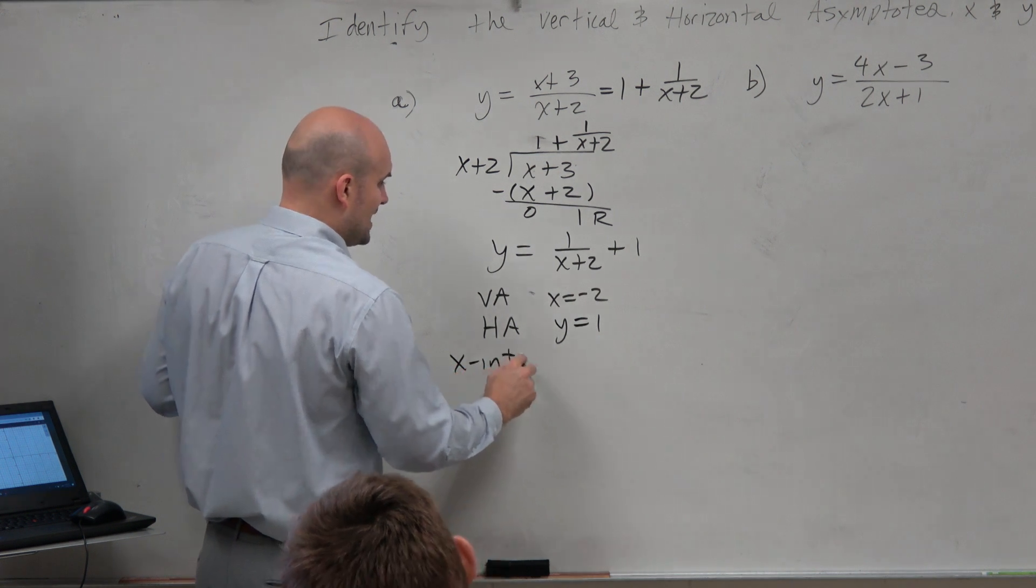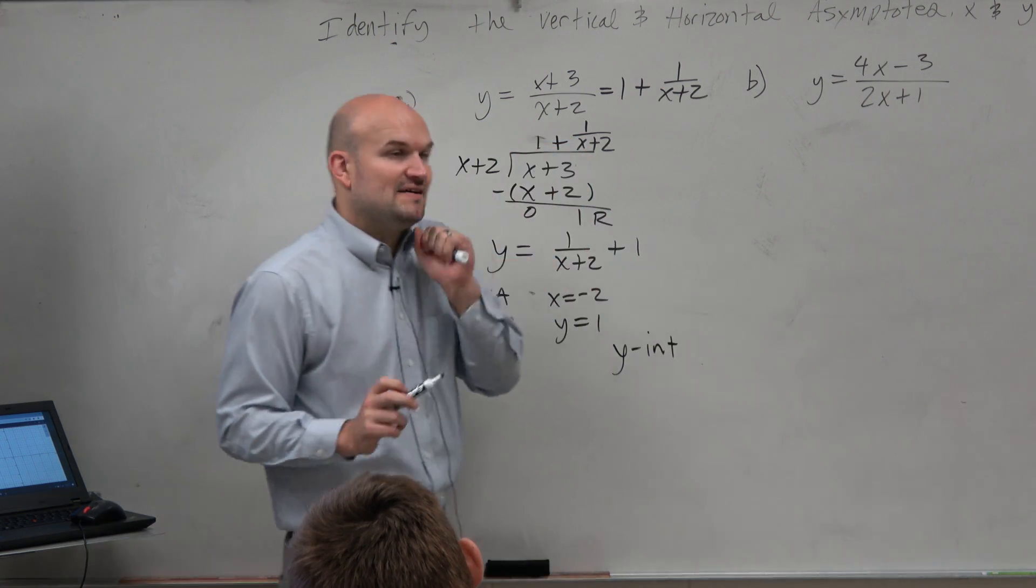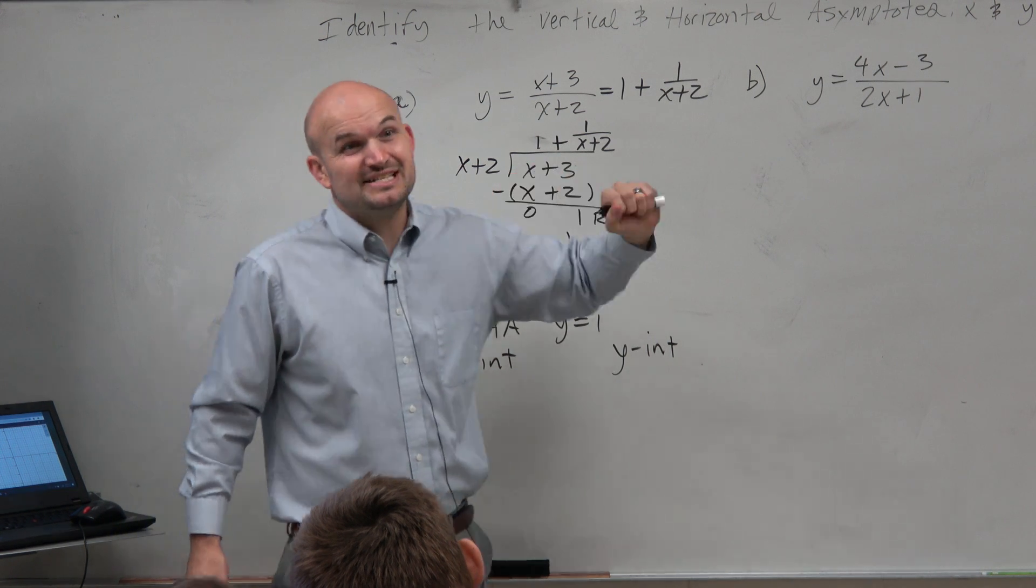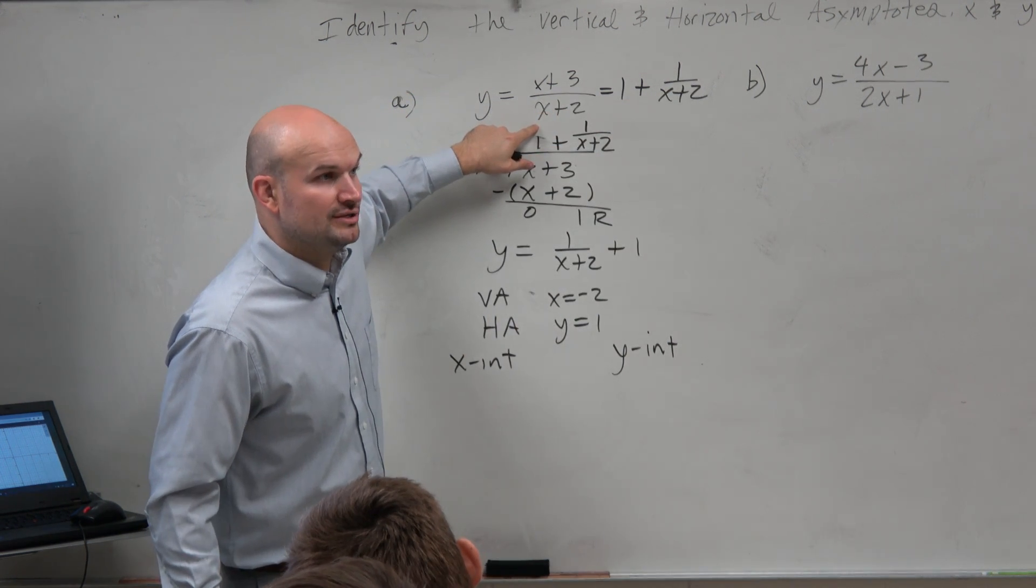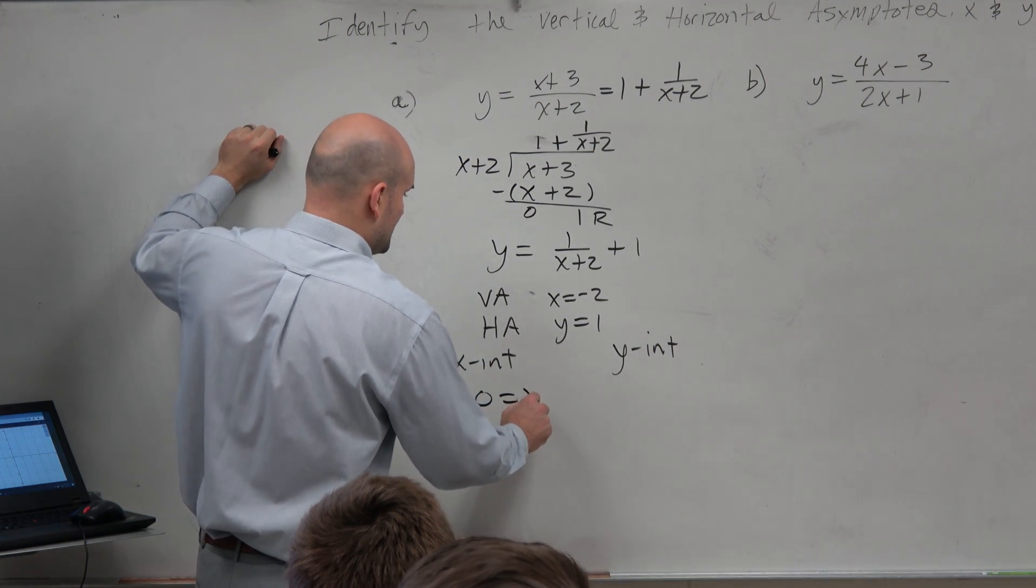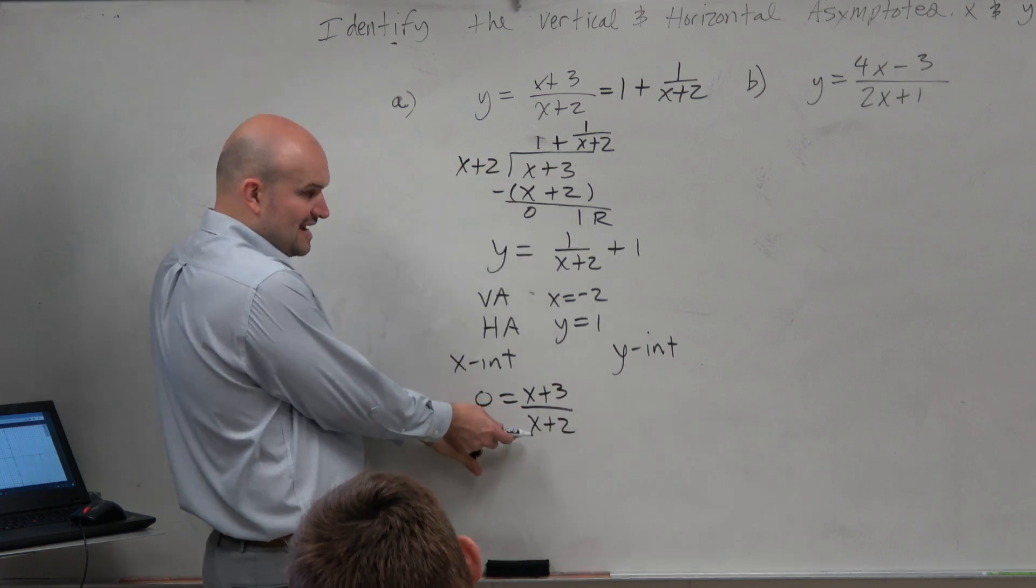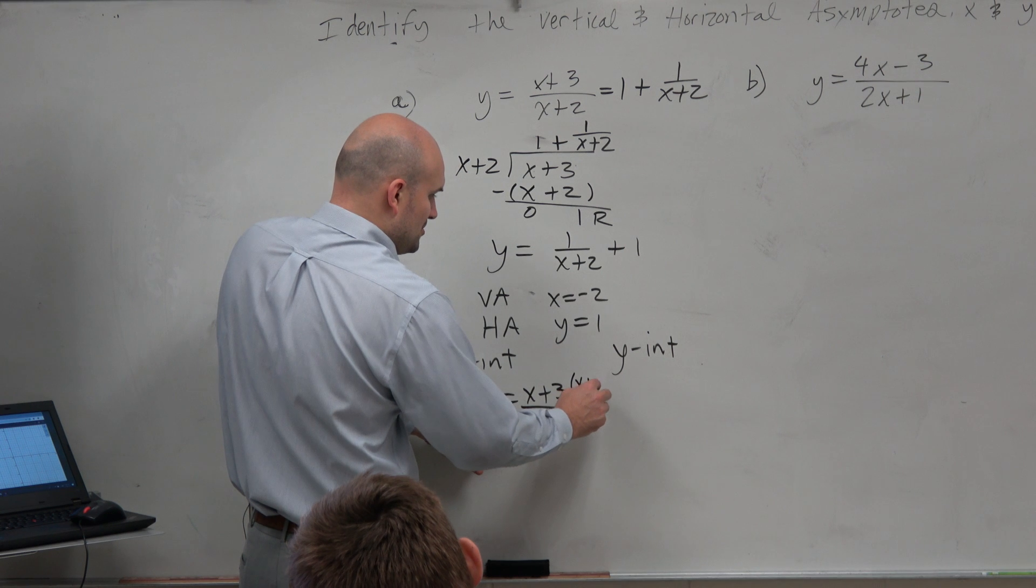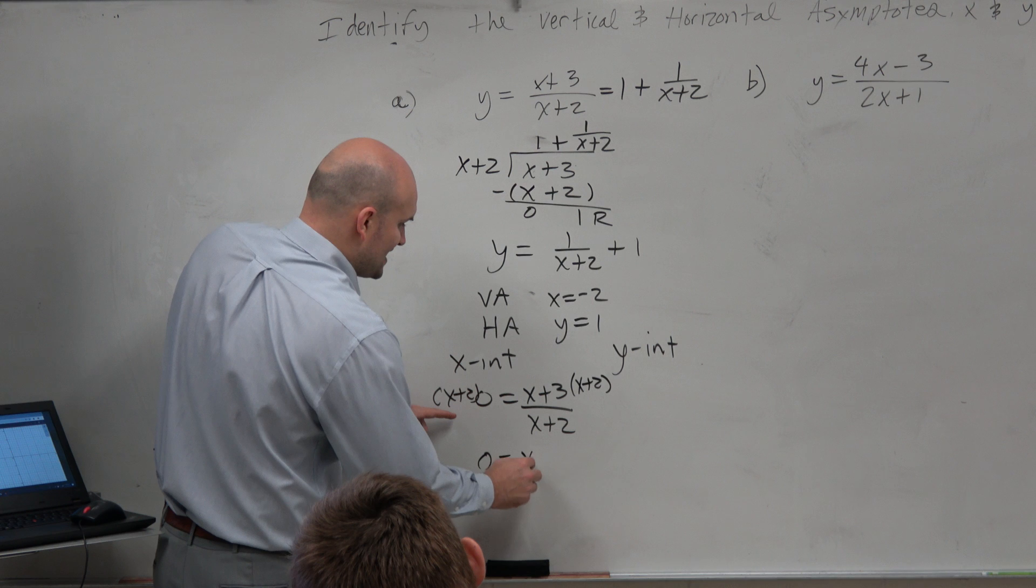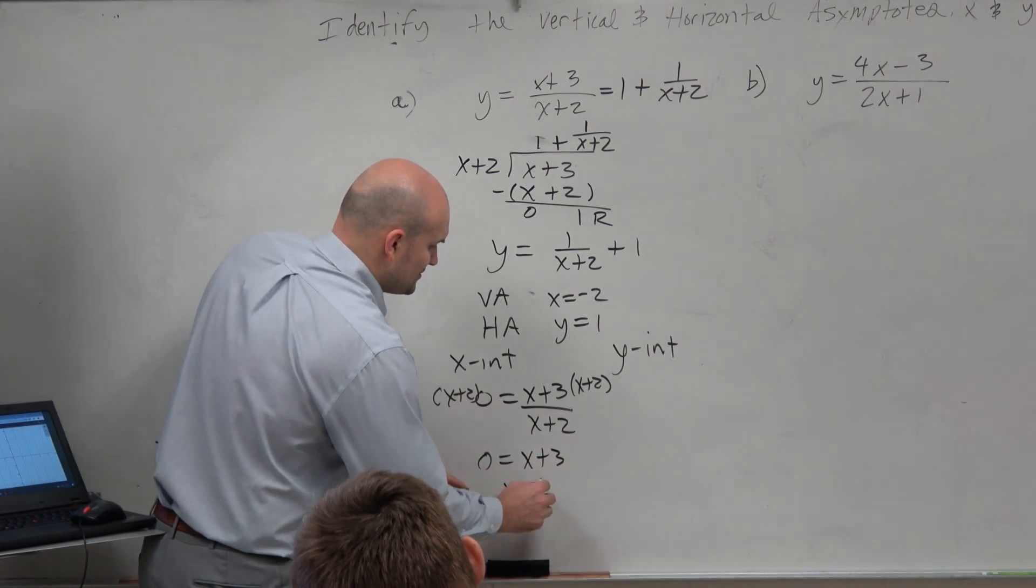x-intercept, now here's where it gets interesting. Do not try to find the x and y-intercept with this function. Plug it into here. The best and easiest way to do it is with your original rational function. And I'll show you why after lunch. But the x-intercept is when y equals 0. If I need to get this x off the bottom, I multiply by x plus 2 on both sides. That goes to 0 equals x plus 3. Can I now easily solve this for x? Yeah. x equals negative 3.